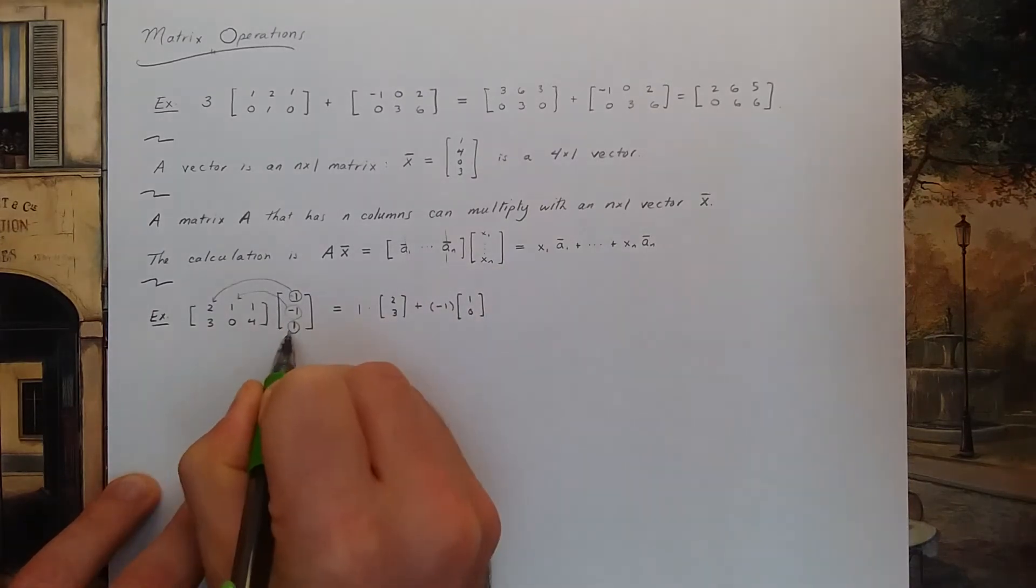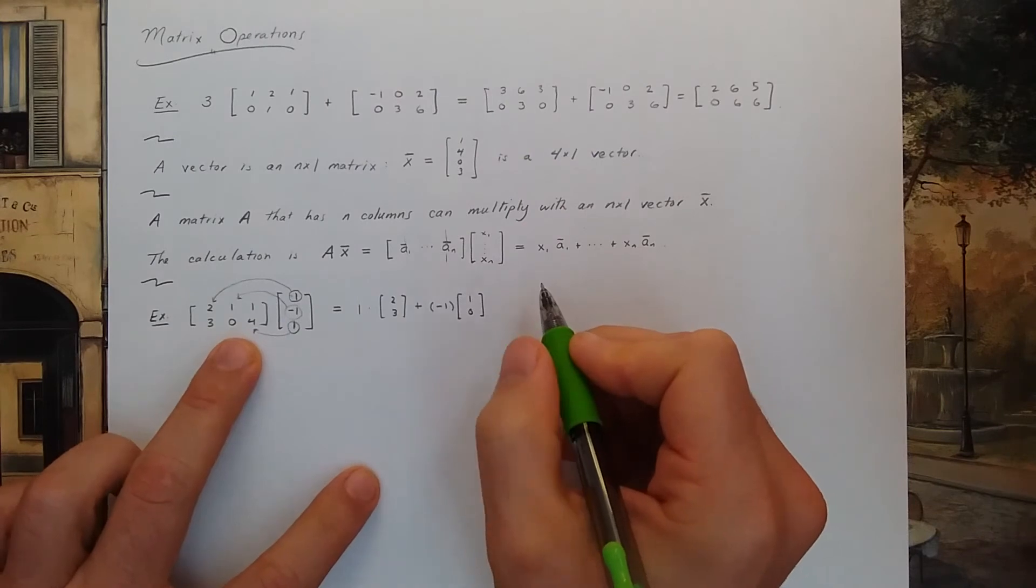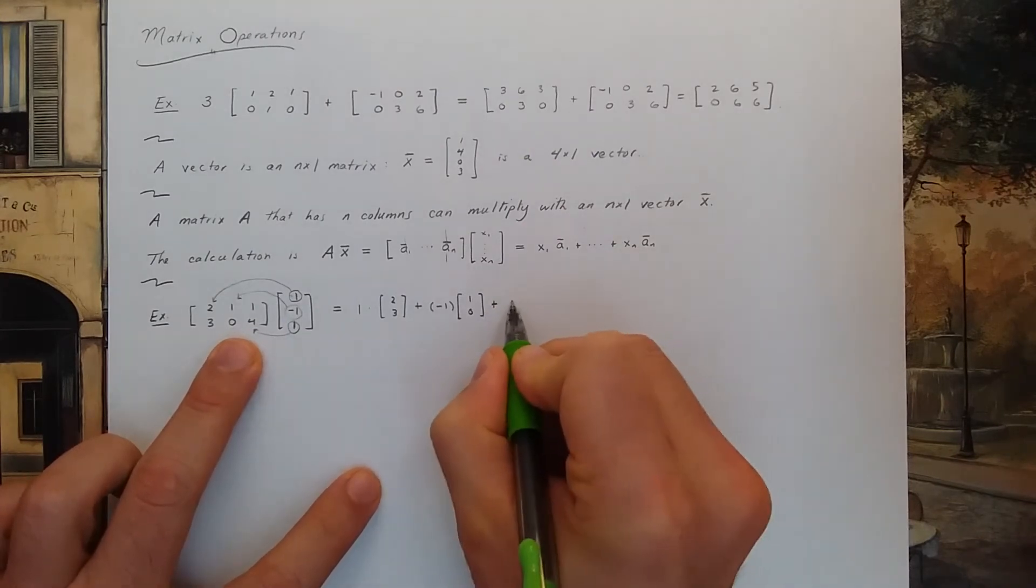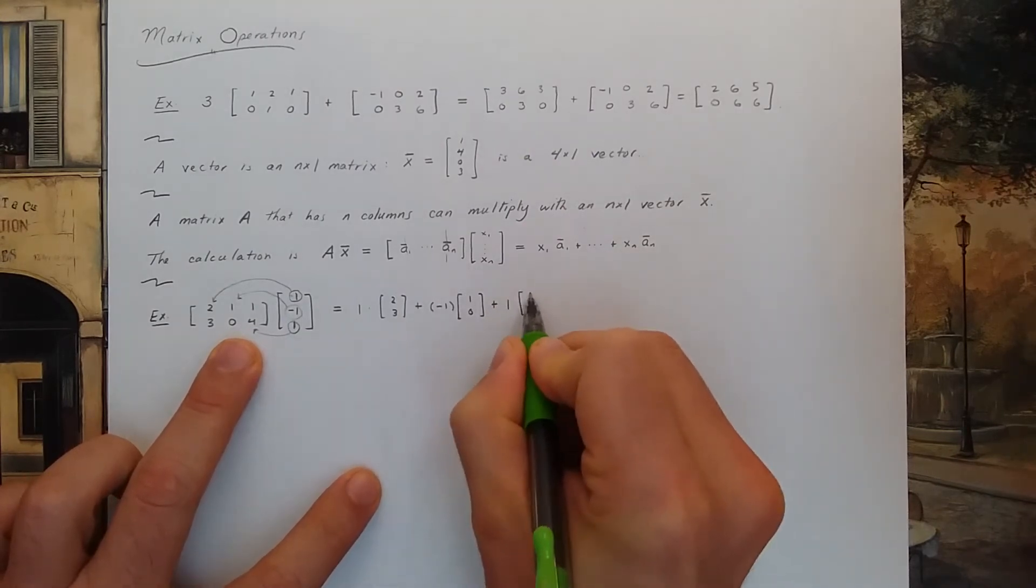And this last one will be multiplied by the third column. So I get 1 times 1, 4.